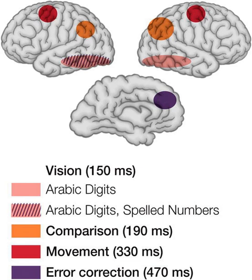Saul Sternberg devised an experiment wherein subjects were told to remember a set of unique digits in short-term memory. Subjects were then given a probe stimulus in the form of a digit from 0 to 9. The subject then answered as quickly as possible whether the probe was in the previous set of digits or not. The size of the initial set of digits determined the reaction time of the subject. As the size of the set of digits increases, the number of processes that need to be completed before a decision can be made increases as well. If the subject has four items in short-term memory, the subject needs to compare the probe to each of the four items in memory and then make a decision.